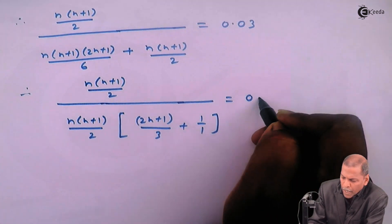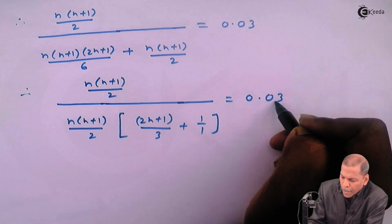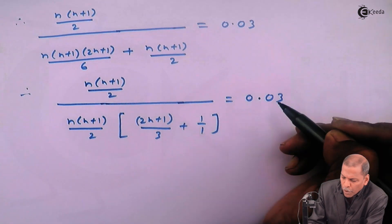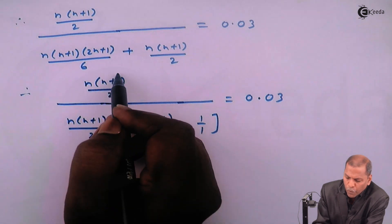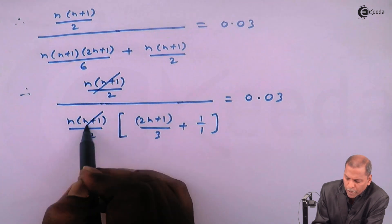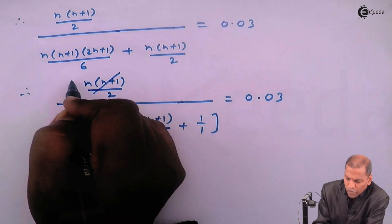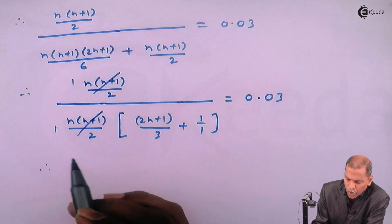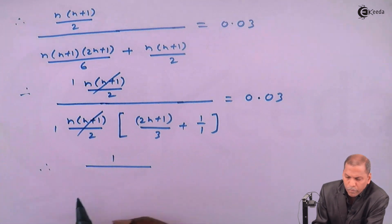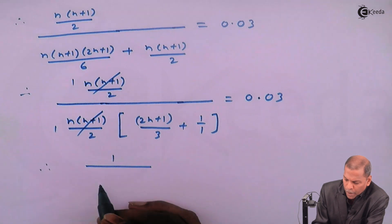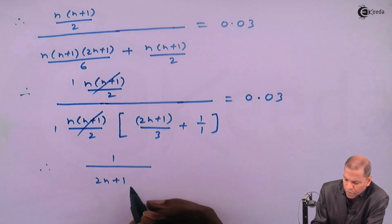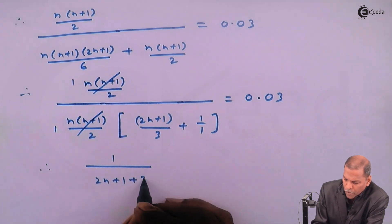And that equals 0.03. Now we cancel n(n+1)/2 from numerator and denominator, so we have 1 upon the denominator. We go for cross multiplication, so we have (2n+1+3), the whole thing divided by 3, and that equals 0.03.